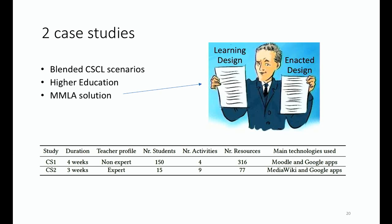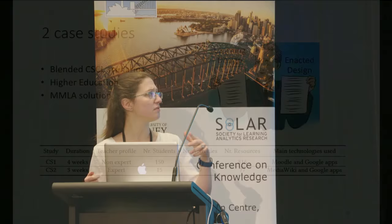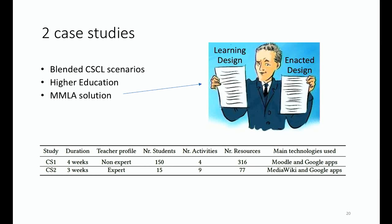The MMLA solution we wanted to adapt was designed to compare whether the teacher's decisions were or were not accomplished during enactment — basically distributing warnings whenever something was not working as expected. These learning activities were tricky in terms of monitoring. In one scenario there were many interrelated activities, so if something failed the whole script could fail. In the other case there were too many students to follow. The digital support was distributed — imagine 150 students using up to 300 digital elements like Google Docs or Moodle.